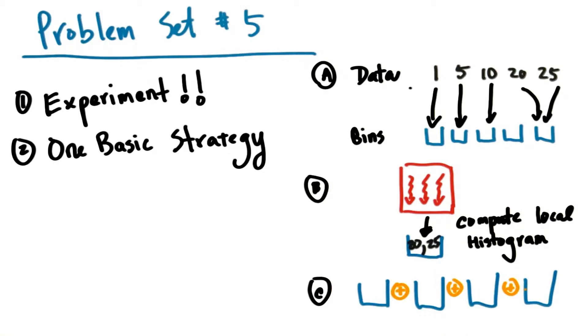This strategy is advantageous because each local histogram will have a small number of bins, so it will be able to fit into shared memory. This is true regardless of how many bins the final histogram has.